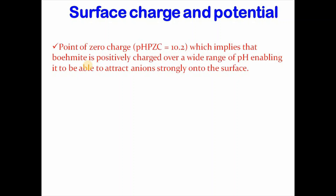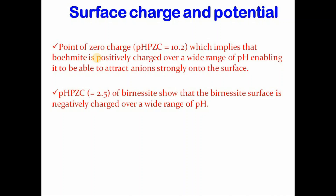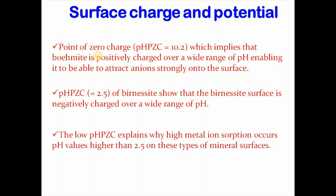Then comes surface charge and potential, which is one of the most important surface properties on which adsorption depends notably. For example, the point of zero charge of hematite surface is around pH 8-9. This means that hematite has a positive charge over a wide range of pH, enabling its surface to attract anions strongly. On the other hand, a low point of zero charge — for example, birnessite — shows that the birnessite surface is negatively charged over a wide range of pH. This low point of zero charge explains why high metal ion adsorption occurs at pH values higher than 2.5 on this type of mineral surface.